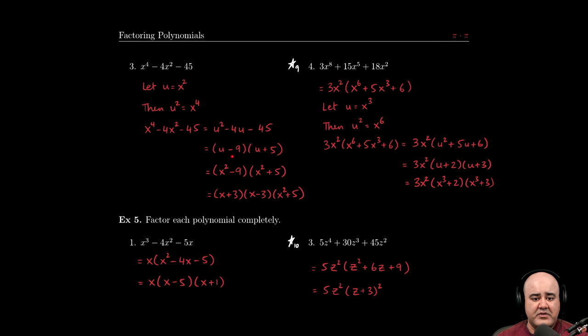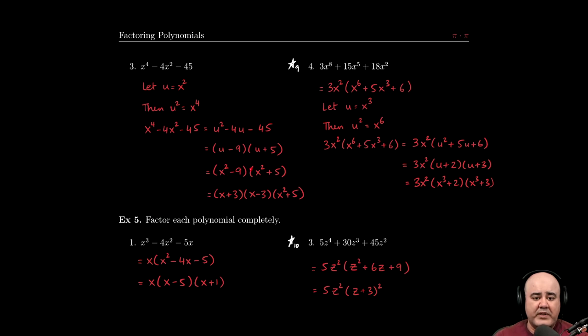This factors to u minus 9 times u plus 5. At that stage you can just replace the u back with what we had substituted in the first place: x squared. So u gets replaced with x squared, giving us x squared minus 9 times the quantity x squared plus 5.